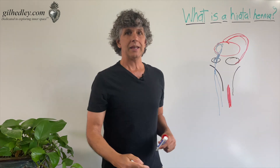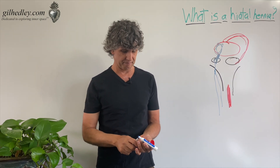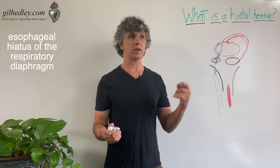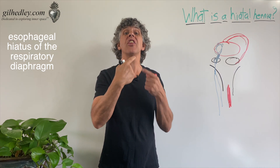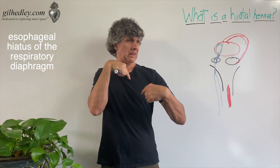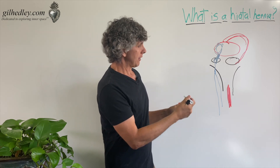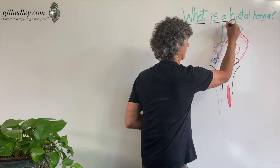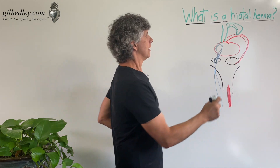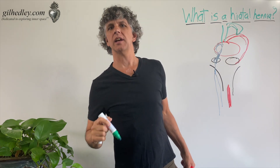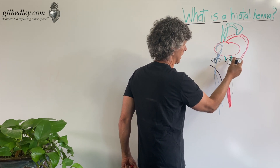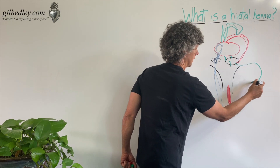Now, over here in the diaphragm we have another pathway through it. This aperture is for the esophagus, so we call it the esophageal hiatus of the diaphragm. Food goes in your mouth, goes down your throat, behind your heart — the esophagus does. Let's paint the esophagus in green. There's your mouth, tongue. The food goes down, goes behind the heart, and comes through here into the shape of the stomach.